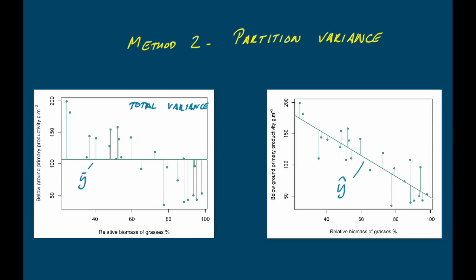What about the error sum of squares? In a regular ANOVA you'd calculate the mean for each group, but here we calculate a predicted value for each data point from our fitted line. The error sum of squares — or error variance — is the amount of dispersion around the fitted line, as opposed to the total variance which is dispersion around the grand mean. The error sum of squares is calculated by subtracting the predicted value from each actual y value, squaring the result, and summing them all, rather than using group means as you would in a standard ANOVA.